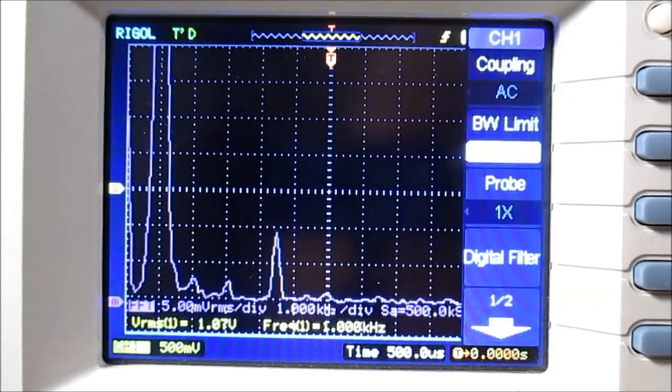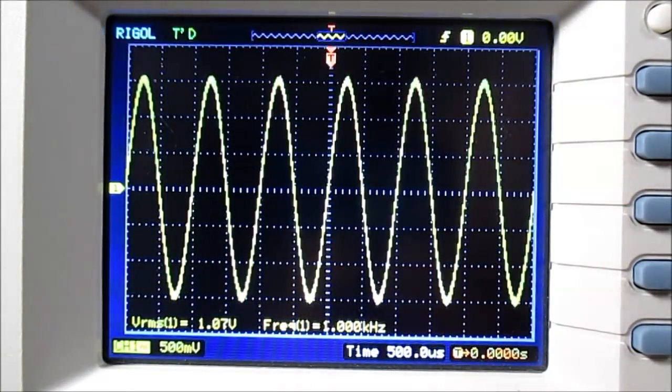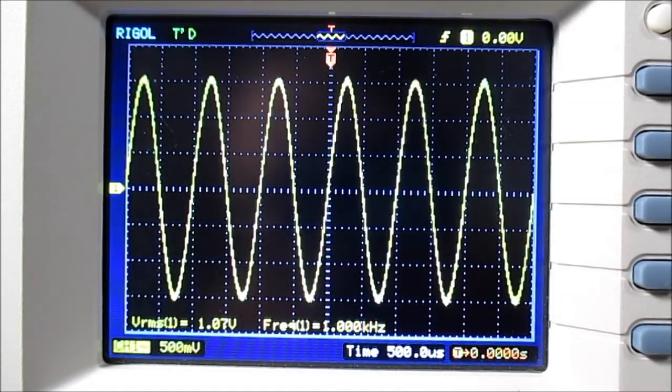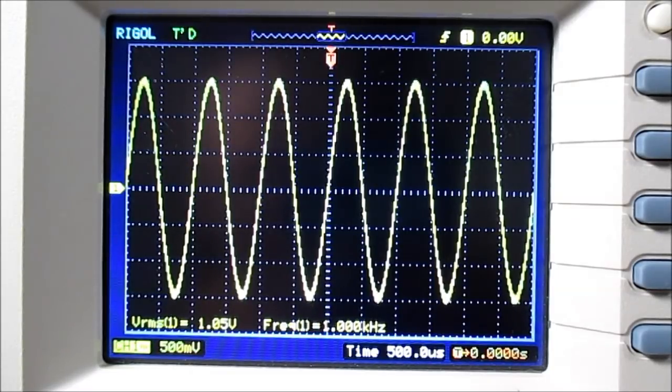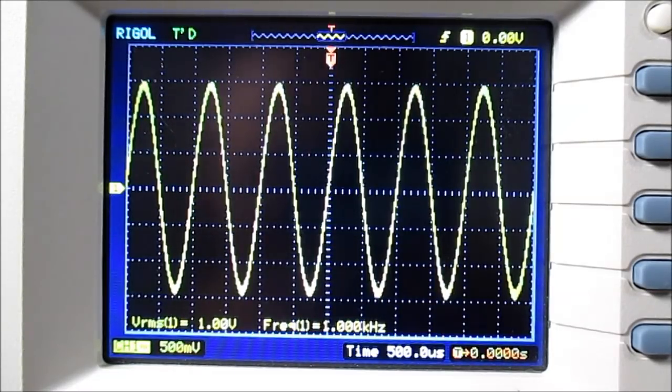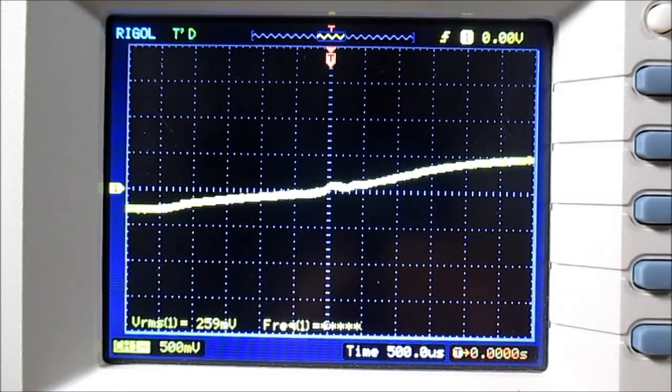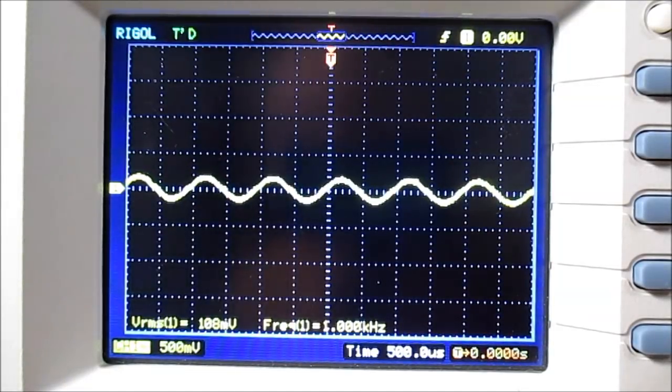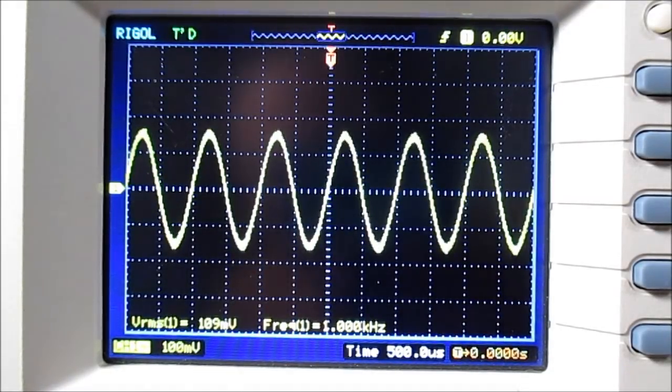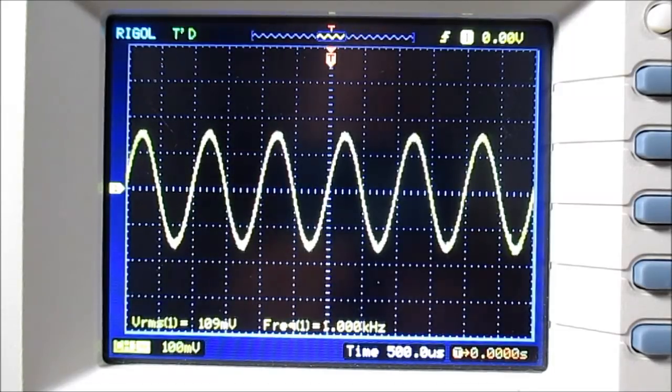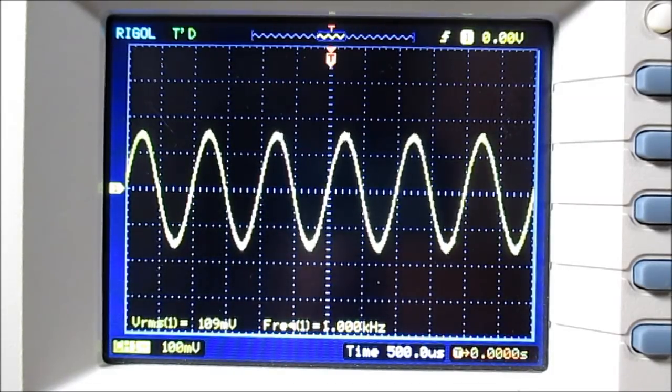Let's check the gain. Turn that off. Okay, so we're running at... Let's get that to 1 volt. That's good. And I'll move the probe over to the input. And turn that up. 109. So yeah, it's roughly, very roughly, a gain of 10.